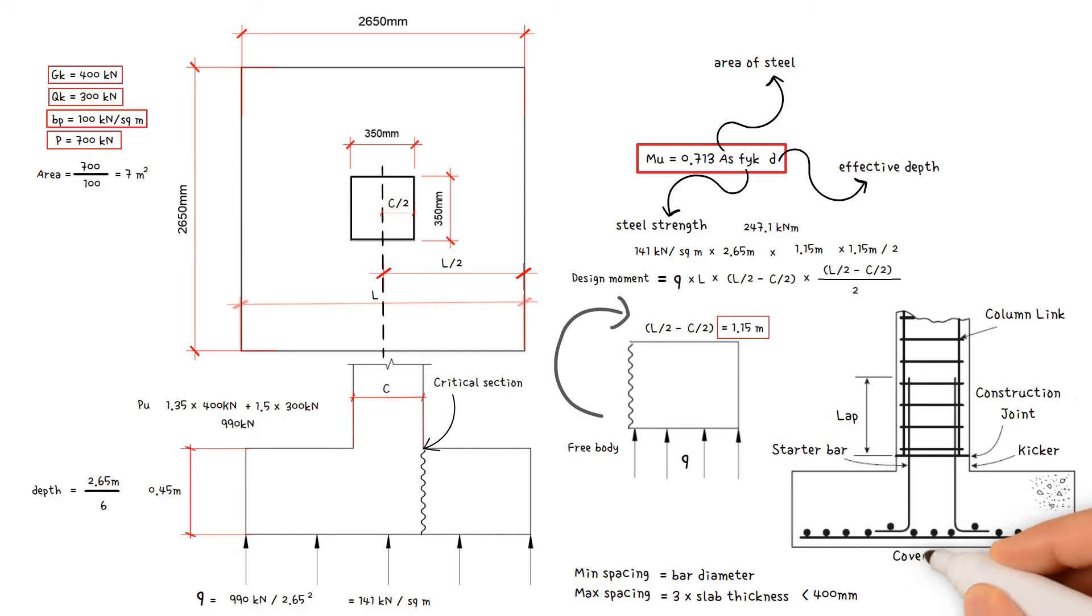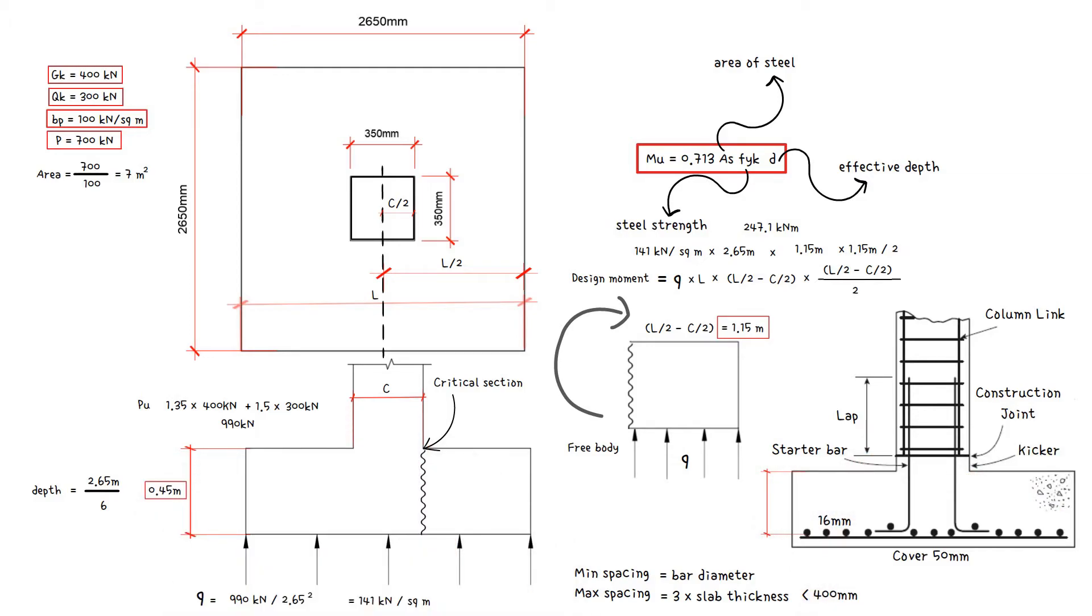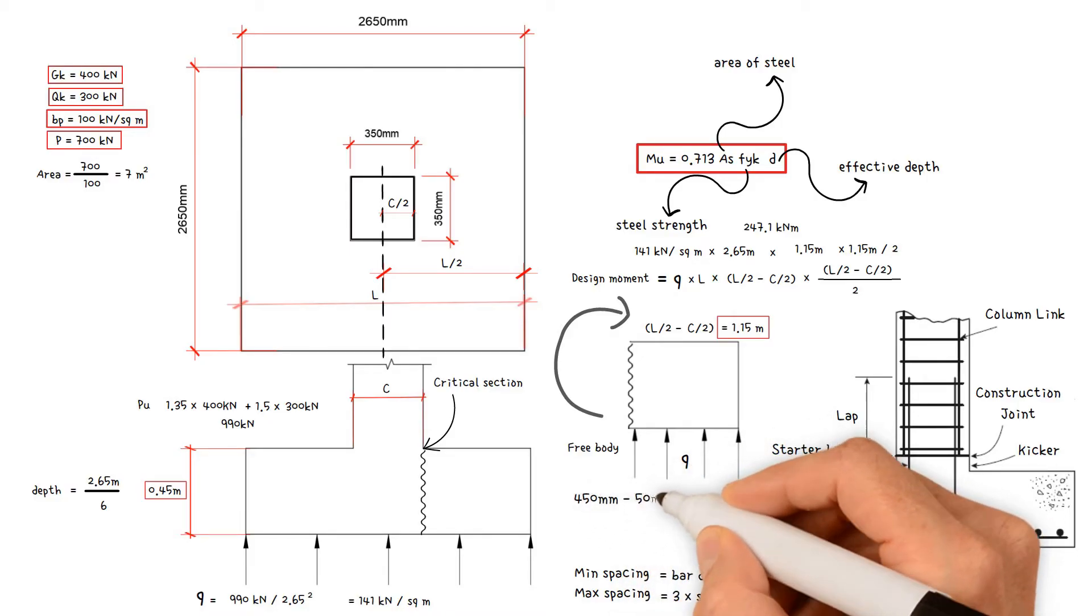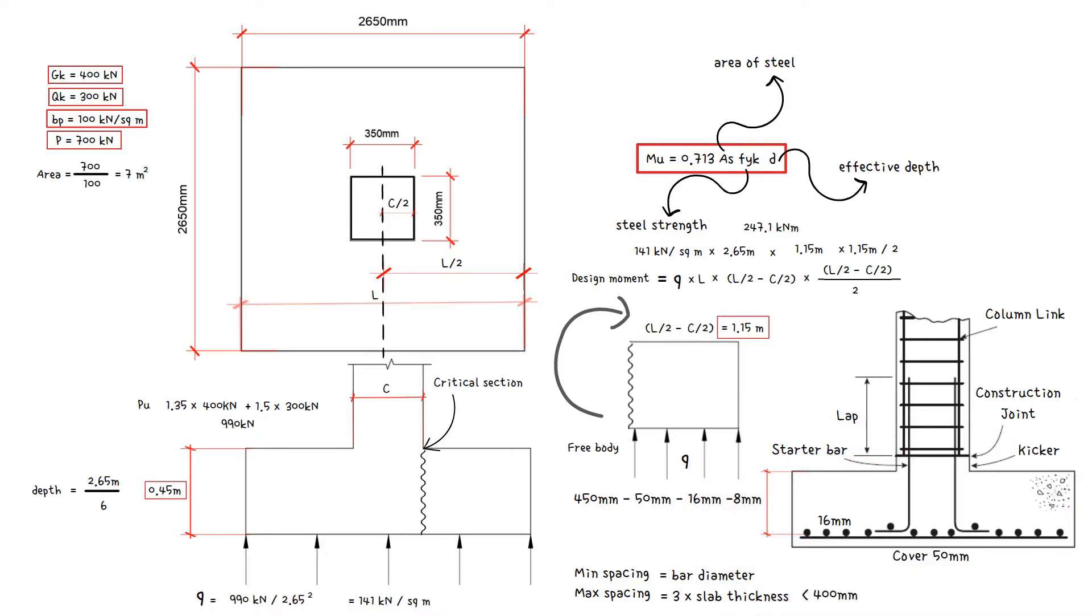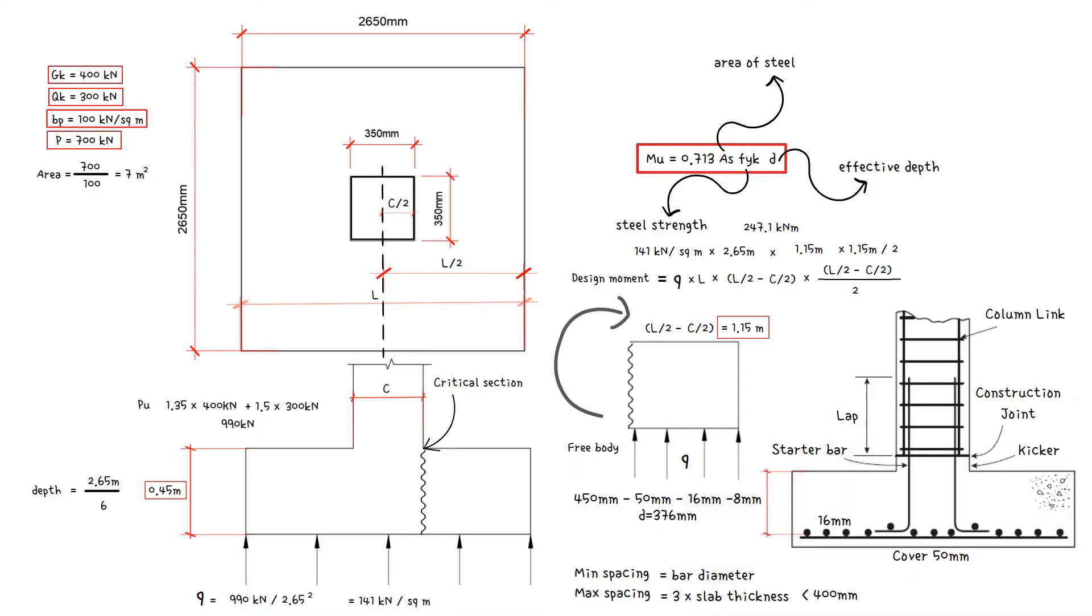For concrete cover of 50 millimeters and assuming 16 millimeters bars, the effective depth of the top layer of reinforcement equals depth of the pad 0.45 times 1000, minus the cover 50 millimeters, minus bar diameter 16 millimeters, minus half bar diameter 8 millimeters. This gives us a value of 376 millimeters.